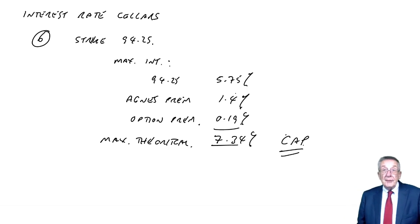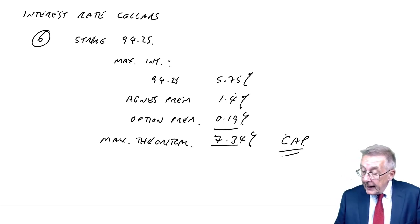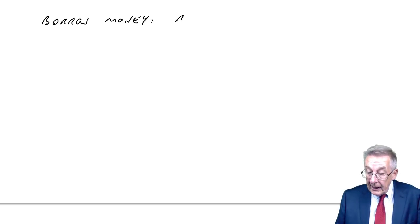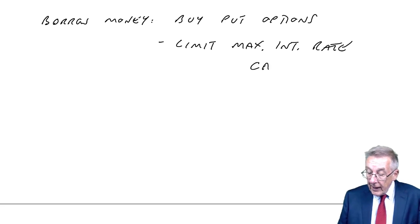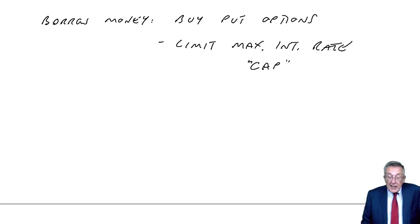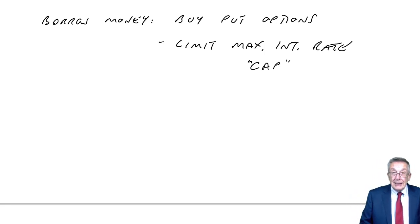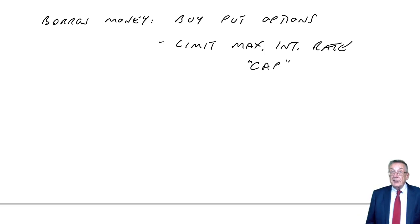But if interest rates are falling, she'll pay less and less — that's the beauty of options. If you're borrowing money, you will buy put options, and that will limit the maximum interest rate — you'll have an interest rate cap. The only downside, obviously, is that you're having to pay a premium, whether or not you end up exercising the option. The premium does cost money.